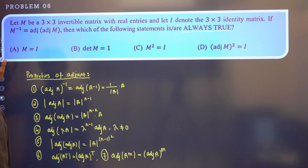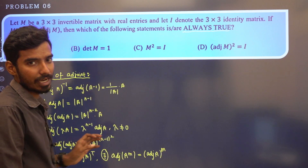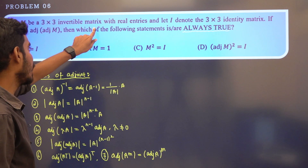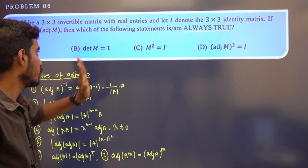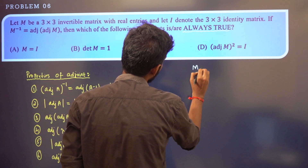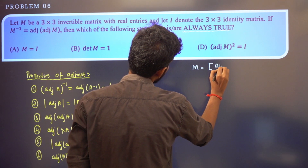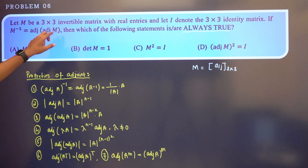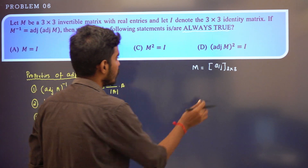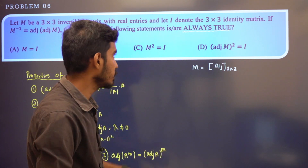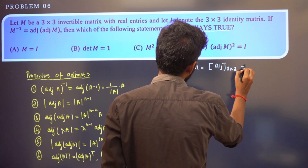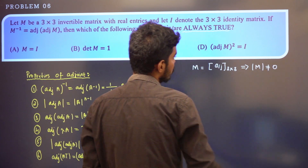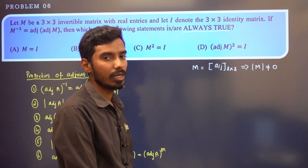Very easy problem based on properties of adjoint. So we will see that M is a 3x3 invertible matrix with real entries. That means the entries are real numbers. Invertible means the determinant is not equal to 0.